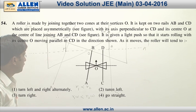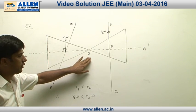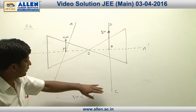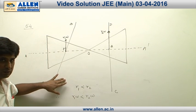Question number 54: A roller is made by joining two cones at point O, and this roller starts moving on two rails, one is CD and another is AB as shown in this diagram.